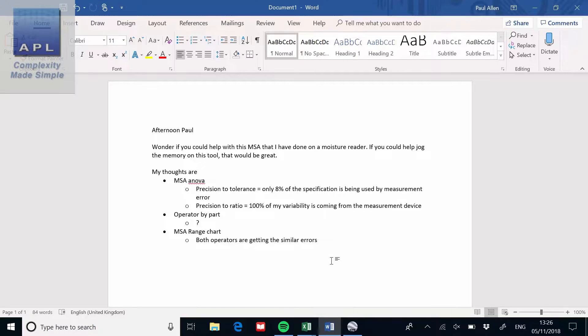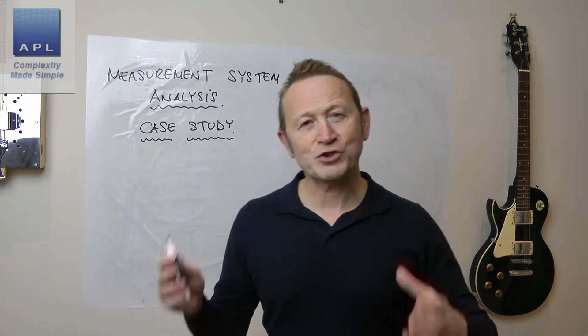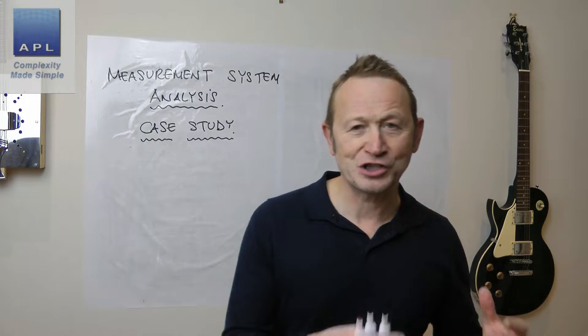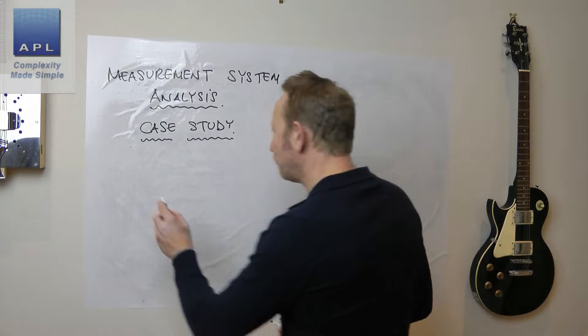So this particular measurement system is checking the moisture as a width of material which is probably about two and a half meters, two meters wide, going through a machine. So if you could help me jog my memory. So he's asking a question about first of all, do we use the ANOVA method? And then of course, he's got these two measurements.